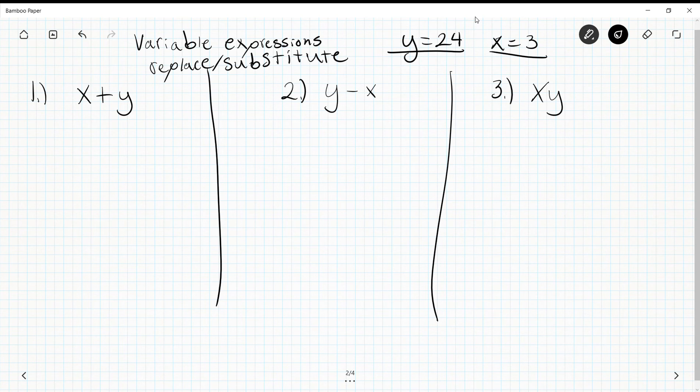So x is going to be 3, so 3 plus 24. If I evaluate this I get 3 plus 24 is 27, and it's done. Also, it's very helpful on homeworks if you circle your answers so it's easy for me to find.